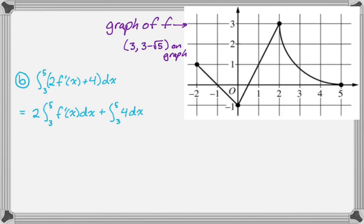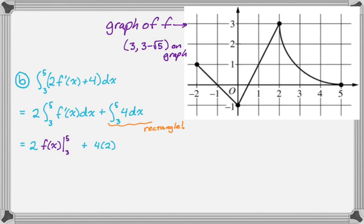Both of these are integrals I can do. For the first one I'll use the Fundamental Theorem of Calculus — the antiderivative of f′ is f, so it becomes f(x) evaluated from three to five. For the second integral, I think of it as a rectangle with height four and base five minus three, which is two, so that's four times two, giving eight. You can also integrate directly and use FTC — same result.